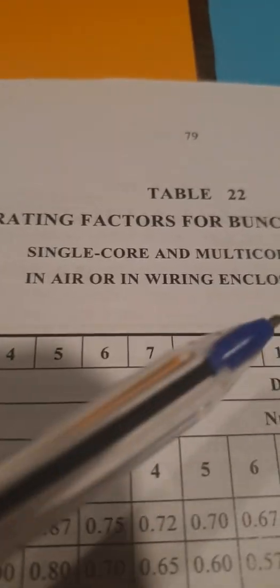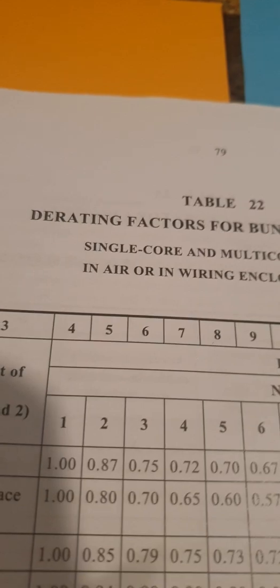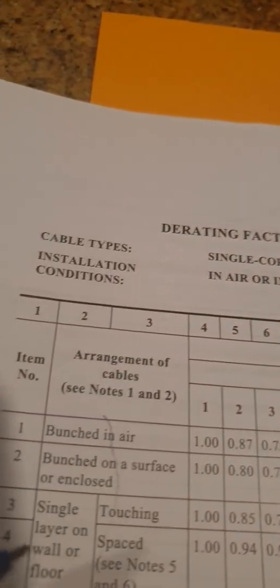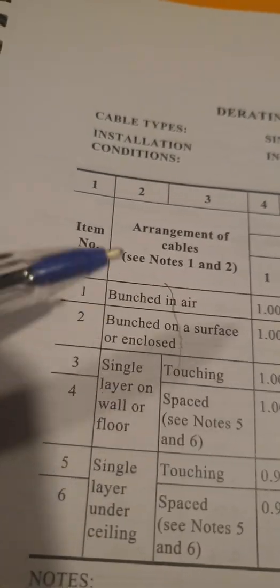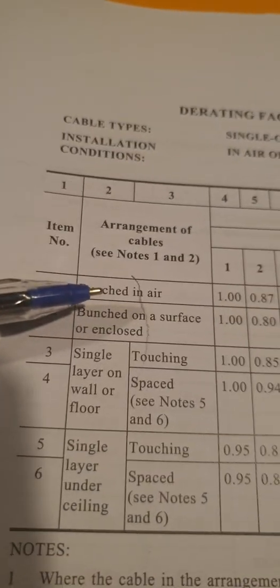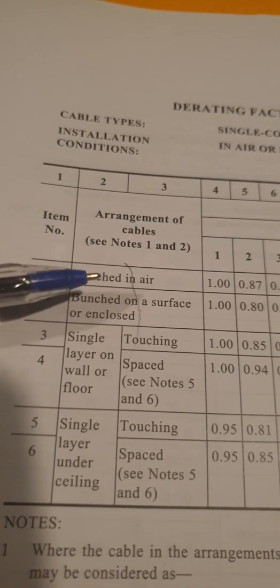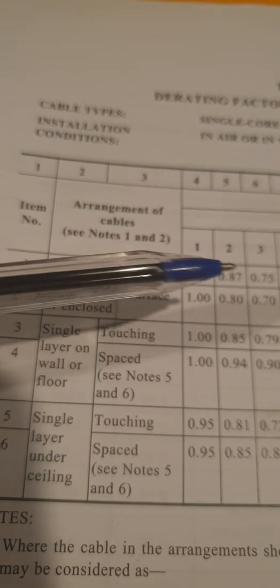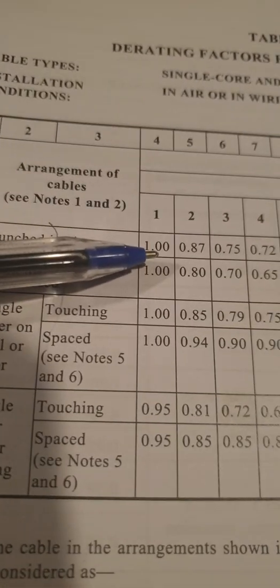At the moment we're looking at Table 22. It says in here the enclosures and all that stuff. Now if you have a look down here, this gives us a description of where we're talking about the cable. These are like bunch cables - bunched in air. We have this one here which talks about the number of cables.